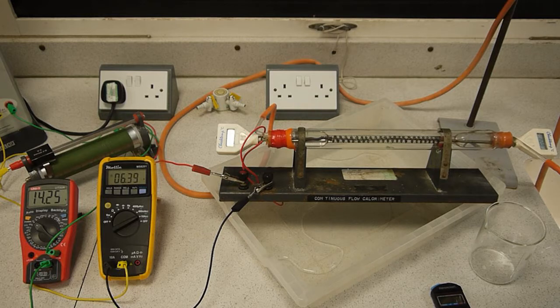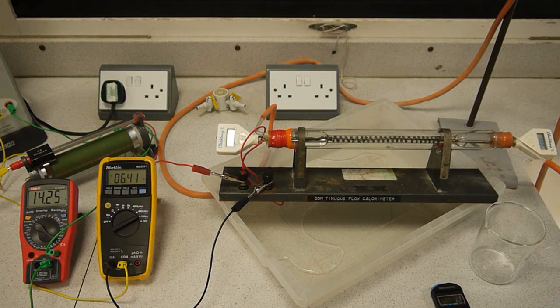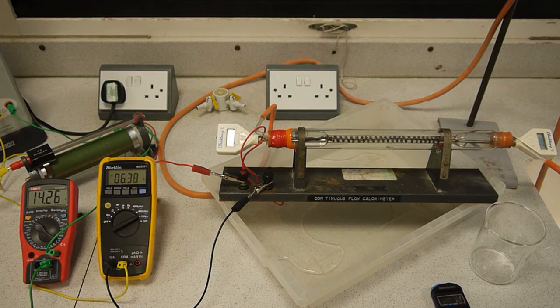I'll then lower the constant head tank, run the experiment again, adjust the voltage and the current so I get the same temperature rise, and that will allow me then to find the heat capacity.